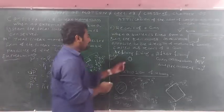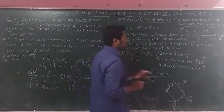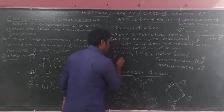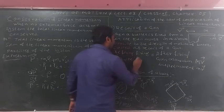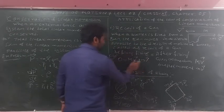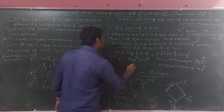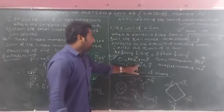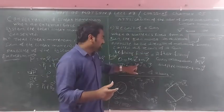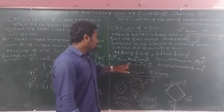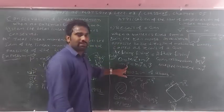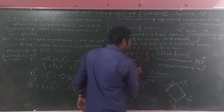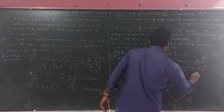Before firing, momentum is zero. After firing: capital M times capital V plus small m times small v equals zero. So MV plus mv equals zero. Capital V is the velocity of the gun, capital M is the mass of the gun, small m is the mass of the bullet, and small v is the velocity of the bullet.